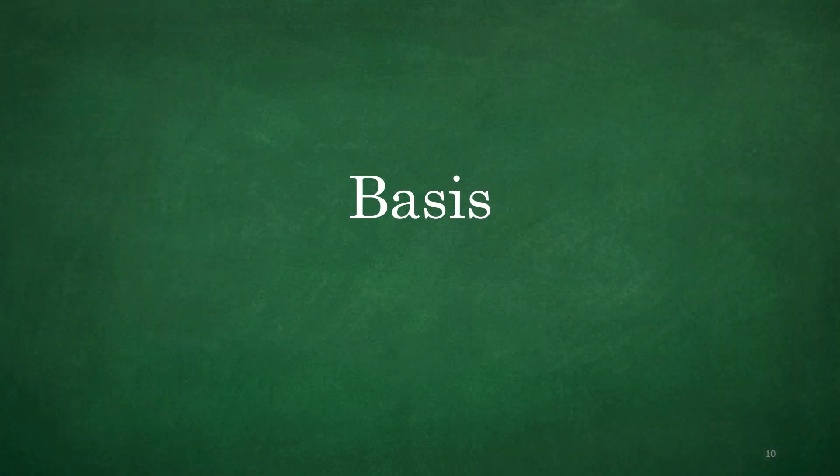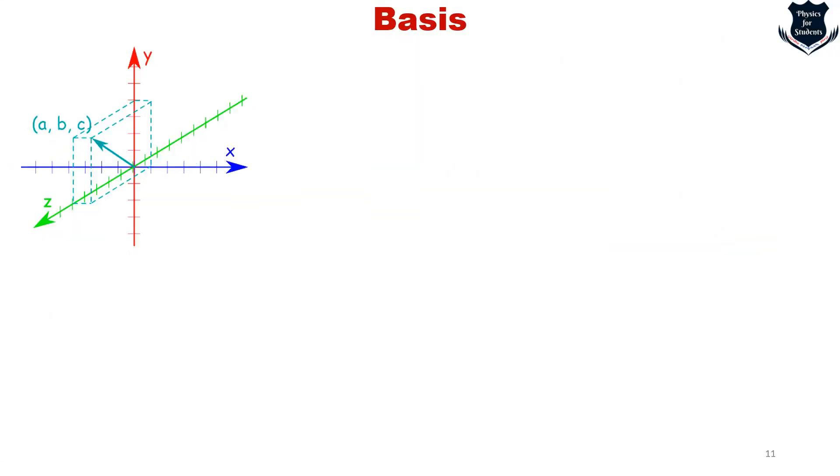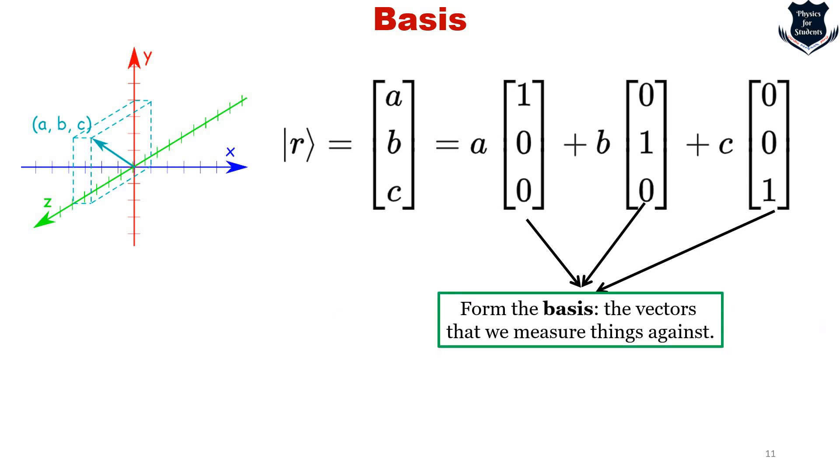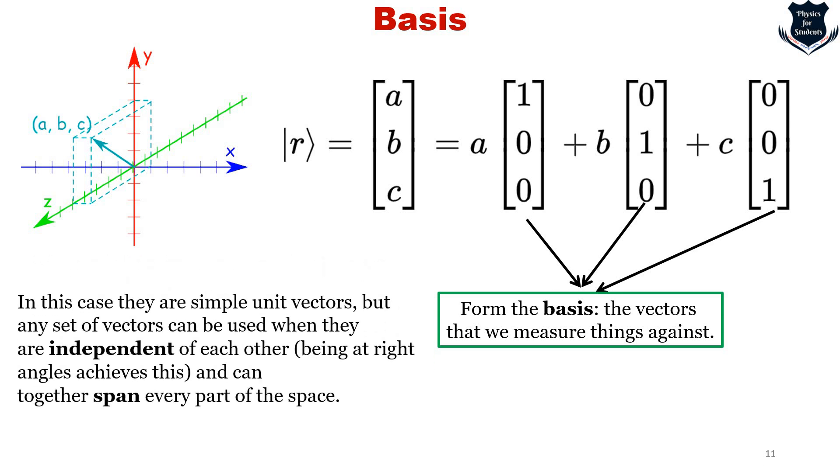Now we come to something very important called the basis of a vector. We can separate the parts of a vector like this: ABC equals A times (1,0,0) plus B times (0,1,0) plus C times (0,0,1). The vectors 1,0,0; 0,1,0; 0,0,1 form the basis we measure against. Any set of vectors can be used when they are independent of each other and can together span every part of space.